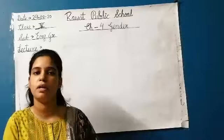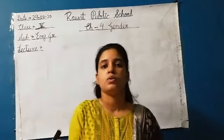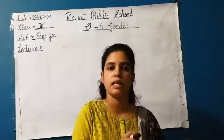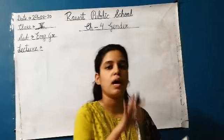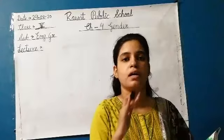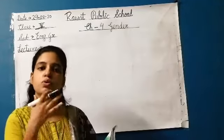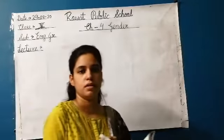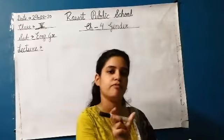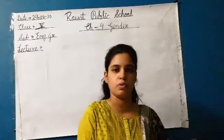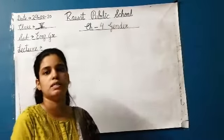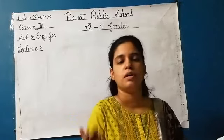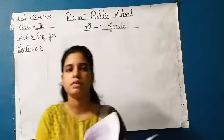A noun that represents both male and female is called common gender. For example, a doctor can be male or female. A teacher can also be male or female. A patient can be male or female. Police can also be male or female. So doctor, teacher, patient — these are examples of common gender.